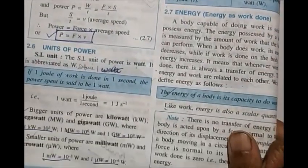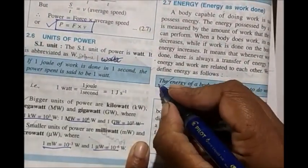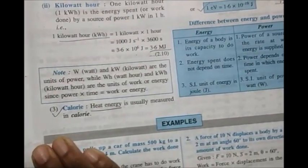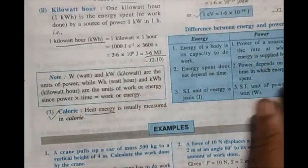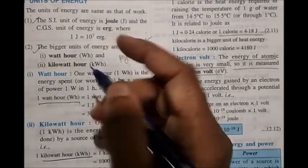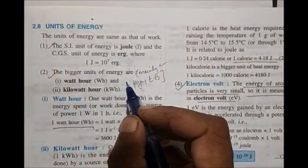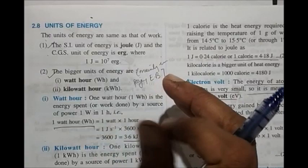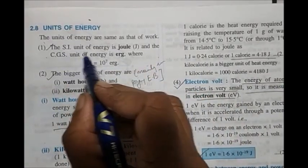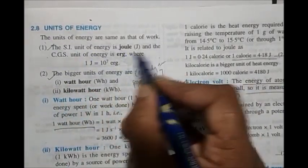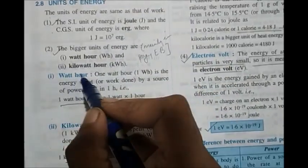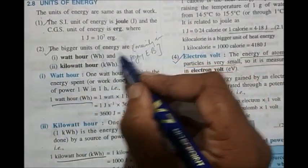Energy: the definition is energy is the capacity to do work. Units of energy — general SI unit is joule, CGS unit is erg, and one joule = 10^7 erg. Then coming to specific units.